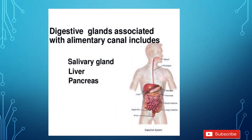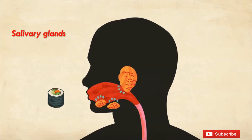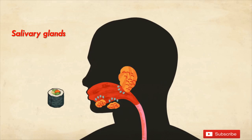The digestive glands associated with the alimentary canal include salivary glands, liver, and pancreas. Salivary glands — you can see here their position. They are present in the mouth and they produce saliva. What is the function of saliva? Saliva softens the food, moistens the food, and digests the starch present in the food.